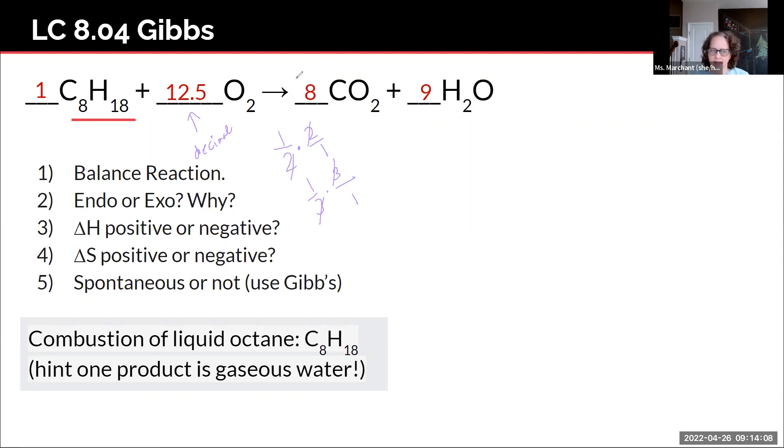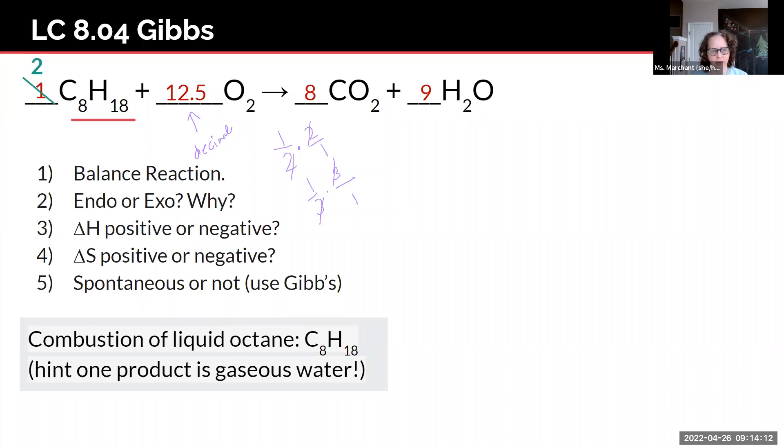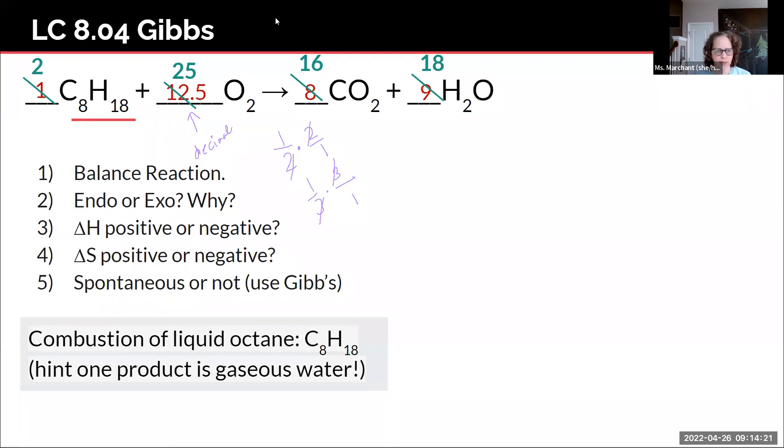And what I do to one thing I have to do to everything. So every coefficient is going to be multiplied by two. That's what makes the math work. So what is my final balanced reaction? Two moles of octane and 25 moles of oxygen gas, 16 moles of carbon dioxide and 18 moles of water. So that is my balanced chemical reaction.